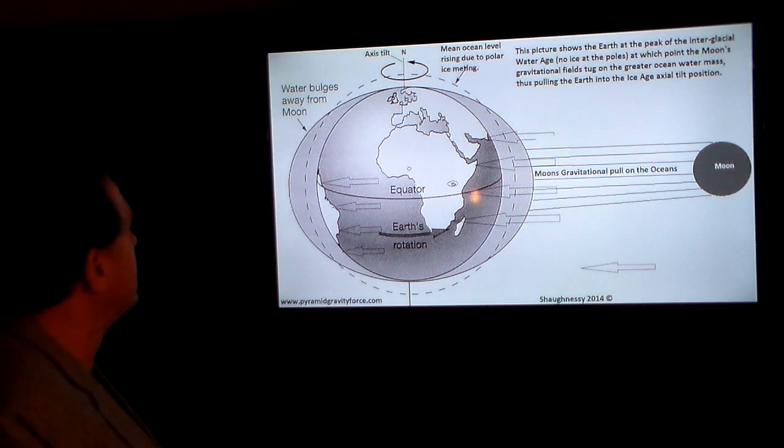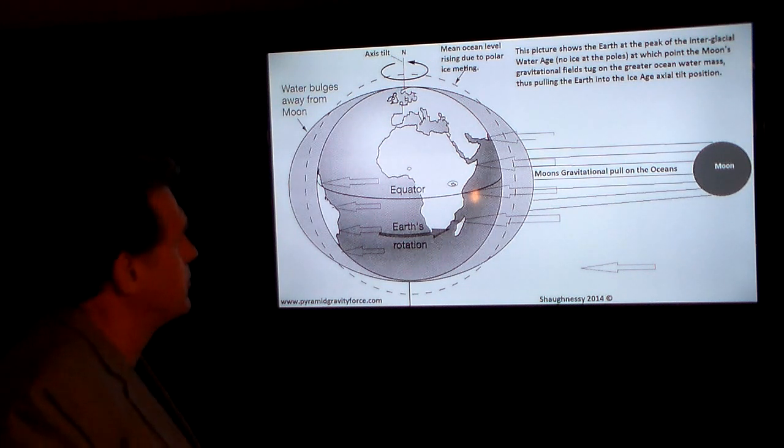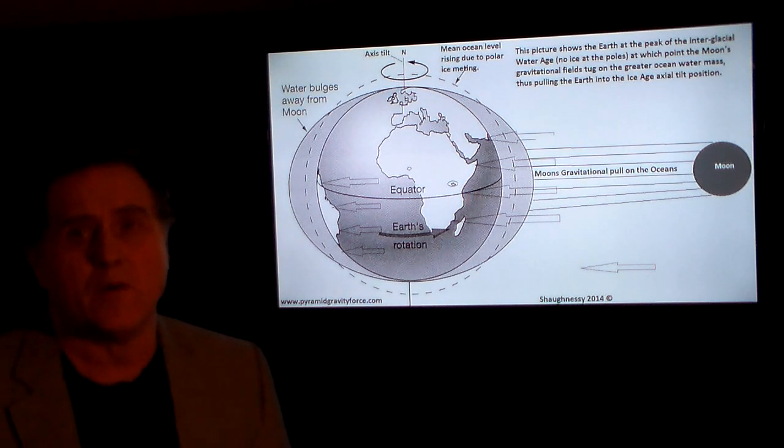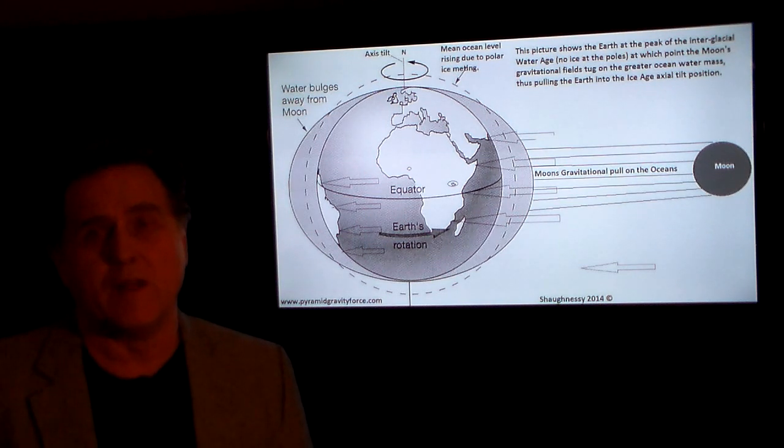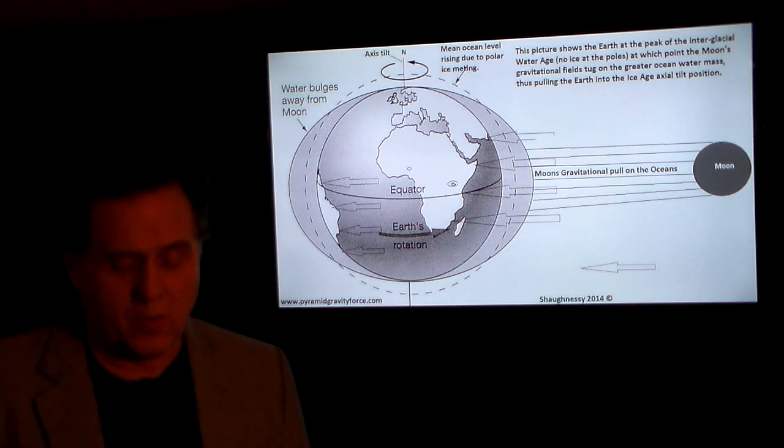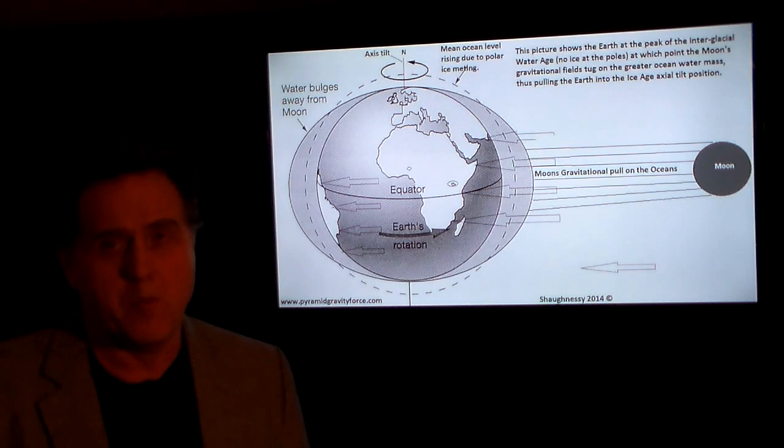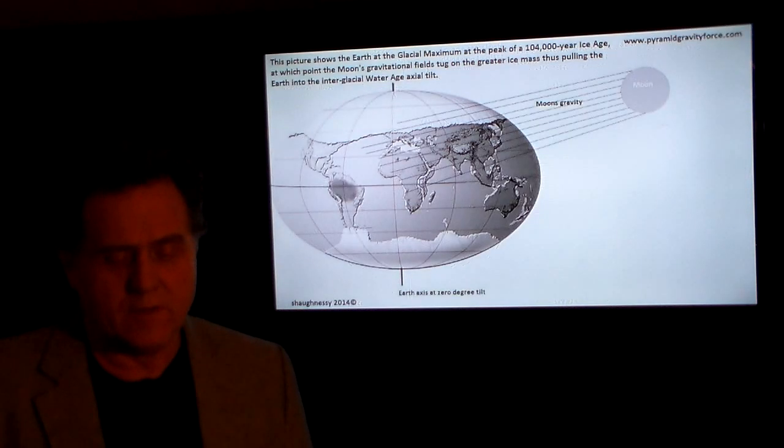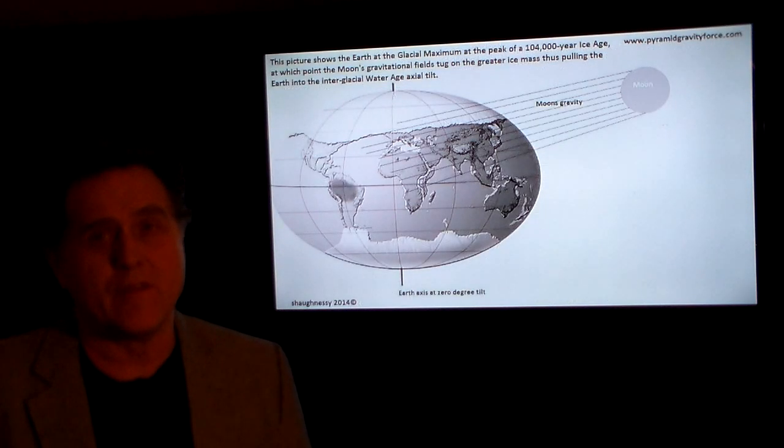This picture shows the Earth at the peak of the interglacial water age, no ice at the poles, at which point the moon's gravitational field tug on the greater ocean water mass thus pulling the earth into the ice age axial tilt position, which is a lower tilt. Because when you go to a lower tilt you have less light shining on the poles, thus you go into ice building mode. These are observable, repeatable physical facts that you can see.